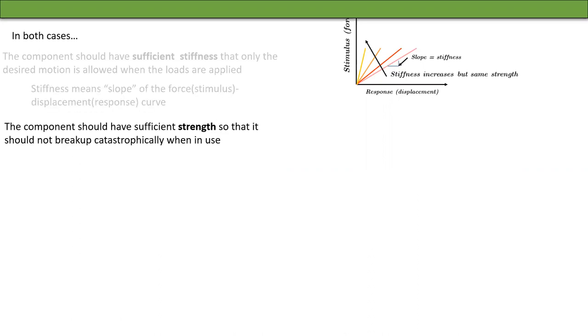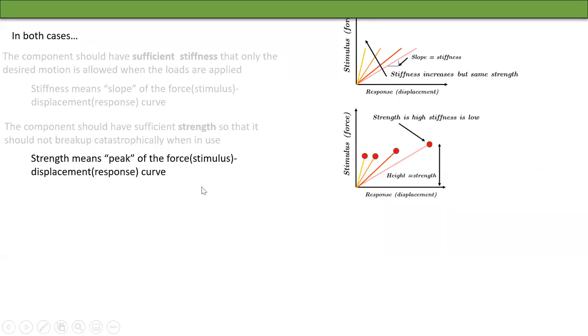The component should have sufficient strength so that it should not break up catastrophically when in use. Strength means peak of the force displacement curve. So the red dots are the places where the curve ends and the height of the peak is called the strength of the material.